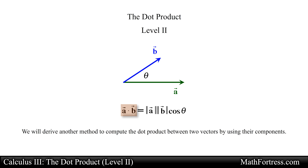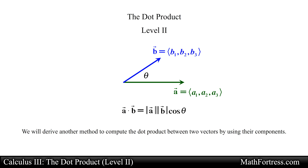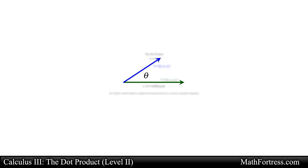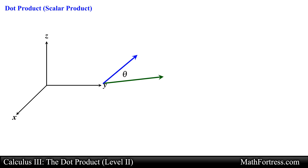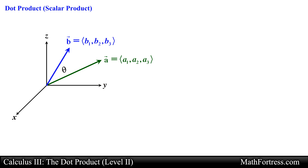We can calculate the scalar product A dot B directly if we know the x, y, and z components of vector A and vector B. To see how this is done, let's use a 3-dimensional coordinate system to draw vector A and vector B, each having an x, y, and z component.